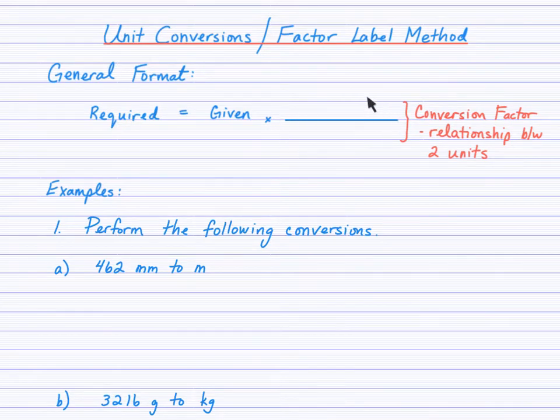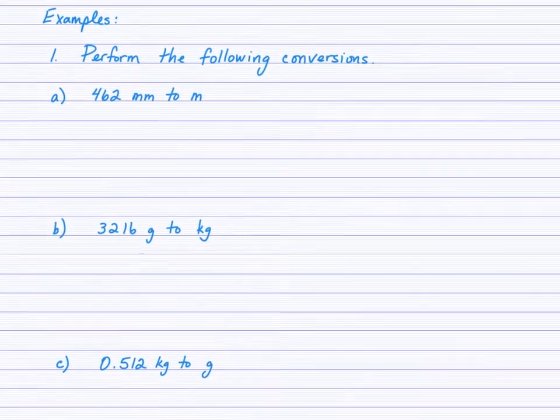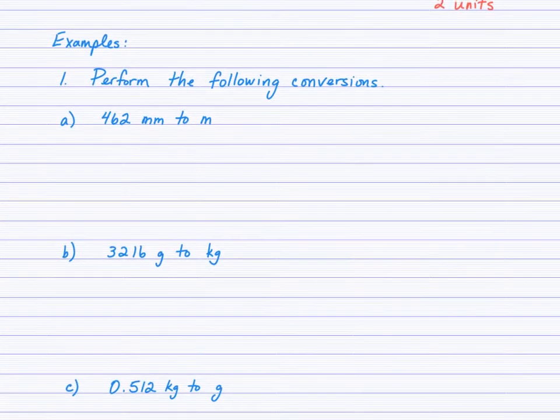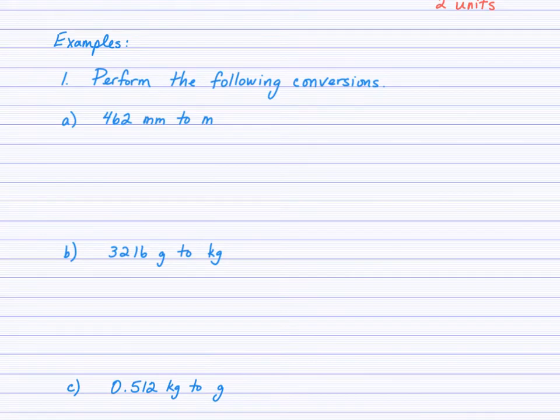So we call this relationship here a conversion factor. For example, 100 centimeters equals 1 meter, 1,000 milligrams equals 1 gram. So there are various conversion factors that we'll use, and sometimes you'll experimentally determine those, and sometimes they'll be given in a question, and sometimes you might have to do a bit of research. For example, converting micrograms to grams.